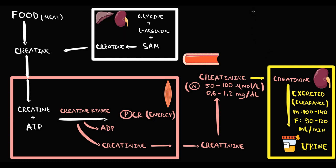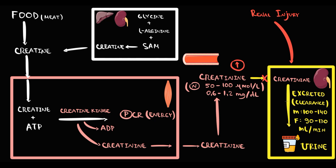In which conditions can we determine an increase in creatine? First of all, it's renal injury. With damage to the kidneys, kidneys cannot uptake the same amount of creatine, so creatine begins to accumulate in the blood and the level of blood creatine increases. In addition, with kidney injury, creatine excretion by the kidneys decreases, and we can determine this by a decreasing creatine clearance.